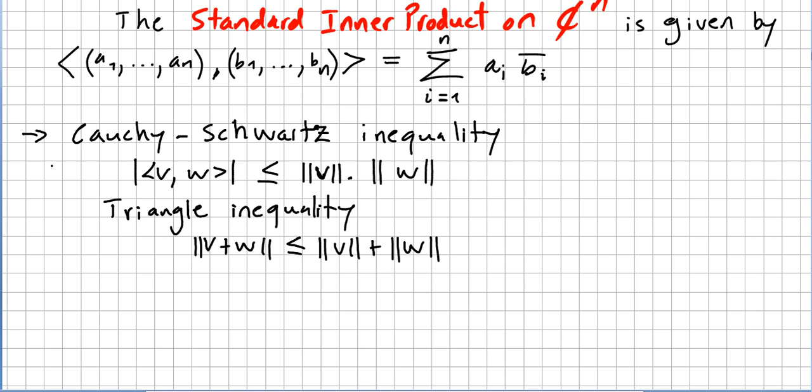One of the properties is the Cauchy-Schwarz inequality where the absolute value of the inner product of v and w is less than or equal to the norm of v times the norm of w. And the triangle inequality where the norm of v plus w is less than or equal to the norm of v plus the norm of w.